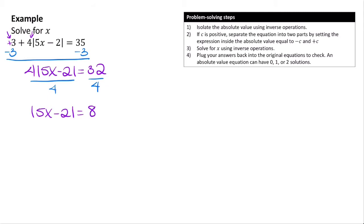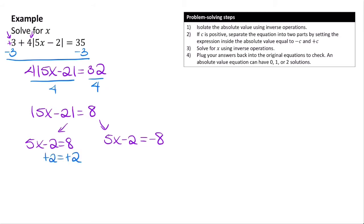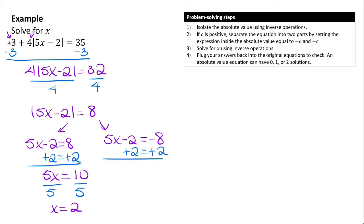Since 8 is positive, we separate into two equations: 5x minus 2 = 8 and 5x minus 2 = negative 8. For the first, adding 2 gives 5x = 10, so x = 2. For the second, adding 2 gives 5x = negative 6, so x = negative 1.2.